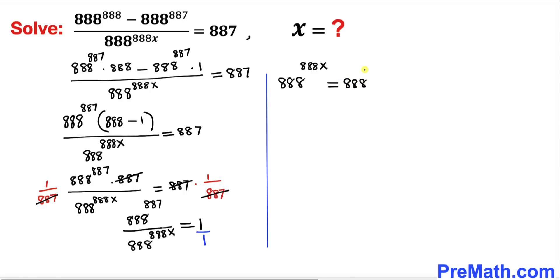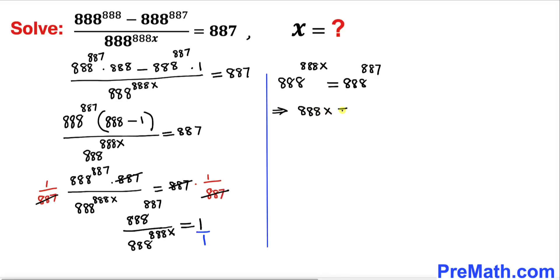Now we can see that the bases on both sides are the same, so we can equate the exponents. Therefore we get 888 times x equals to 887. Let's divide both sides by 888 to isolate x.